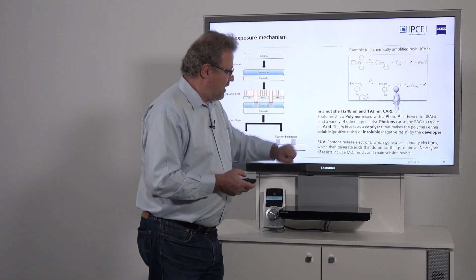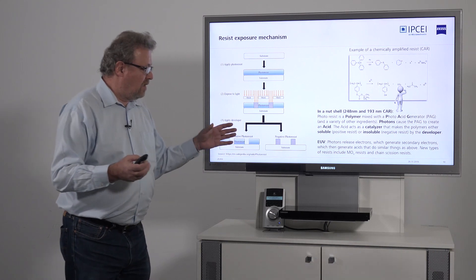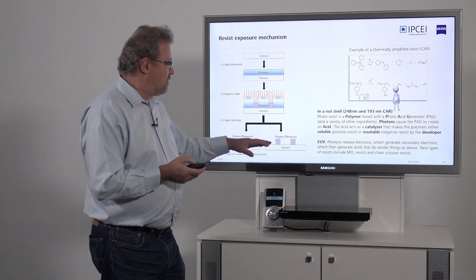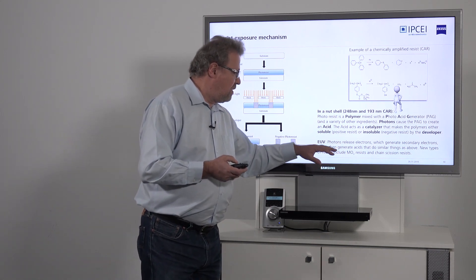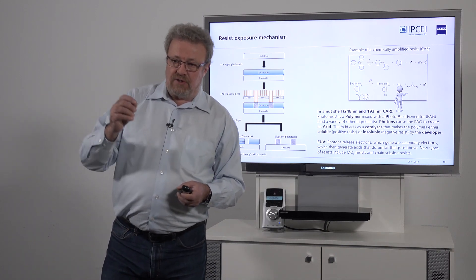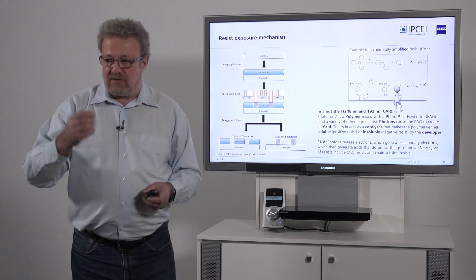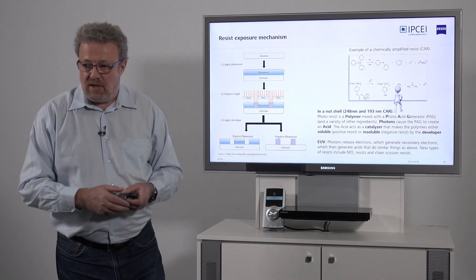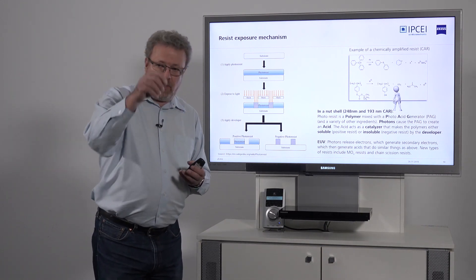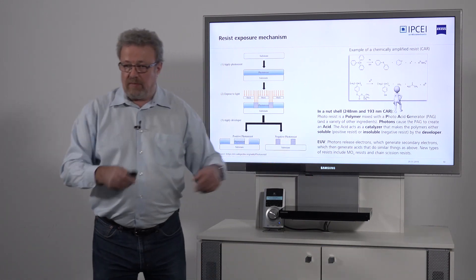That applies to 248 and 193 nanometer lithography, and also EUV — the idea is the same. You also have chemically amplified resists and different types of resists. The only difference is that the EUV photon has such high energy that it releases an electron, which still has very high energy. Rather than doing reactions directly, it releases secondary electrons while bouncing around in the material, and those secondary electrons are able to do the chemistry.